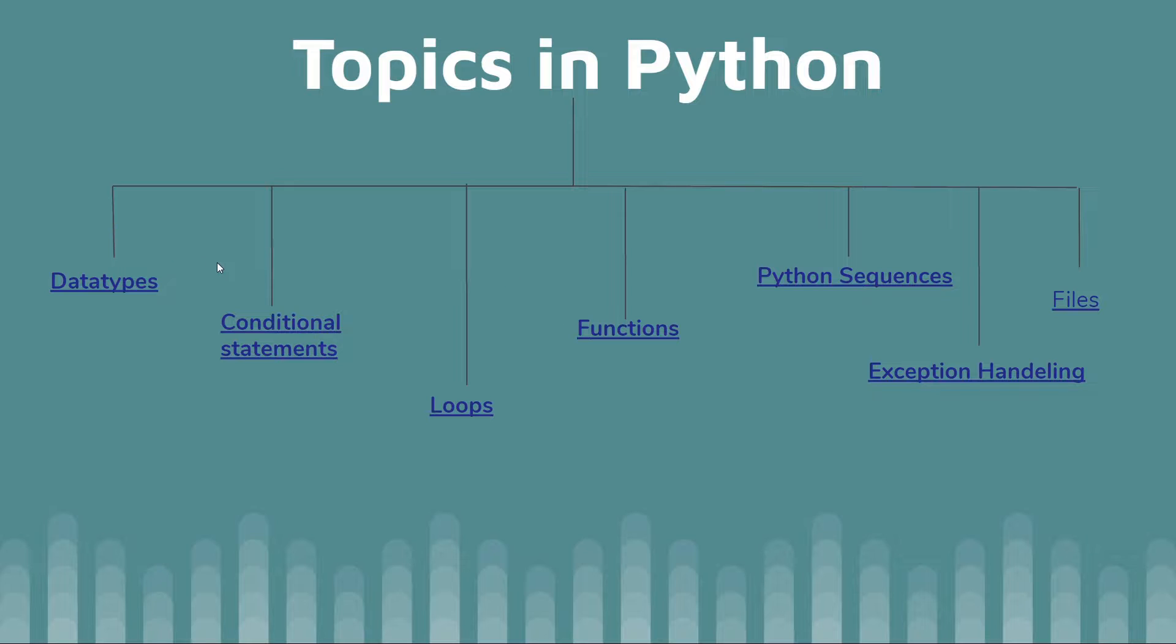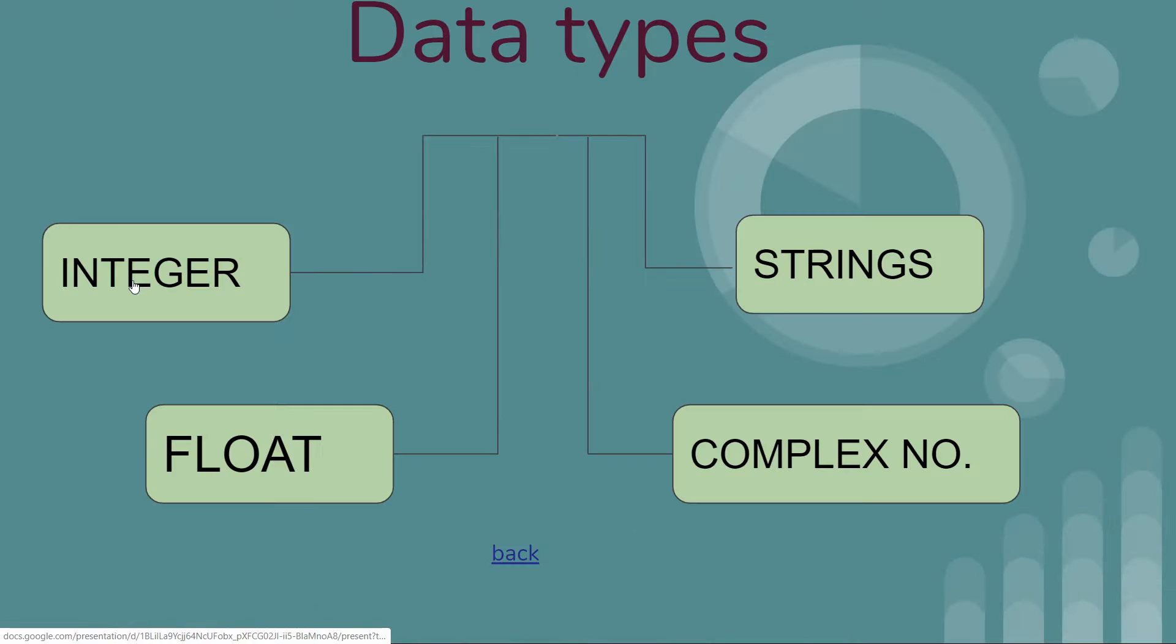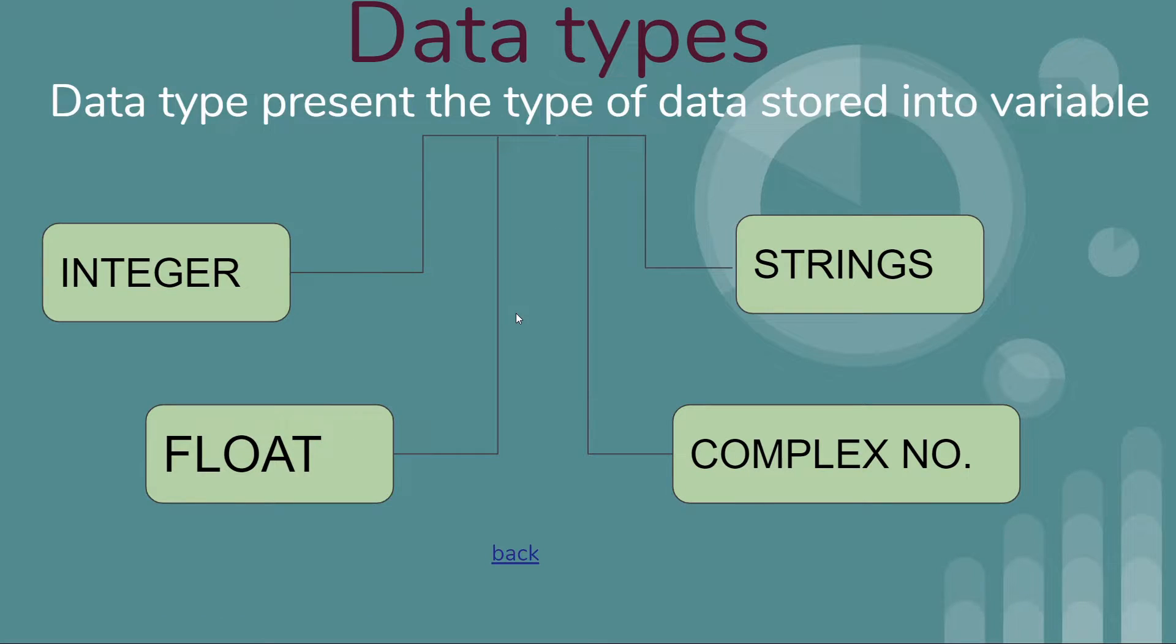Data types present the type of data stored into a variable. There are basically four types of data types in Python: integer, strings, float, and complex number. We directly use variables in Python without explicitly declaring these data types.